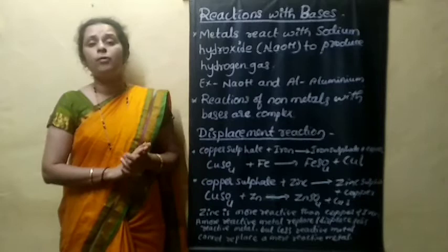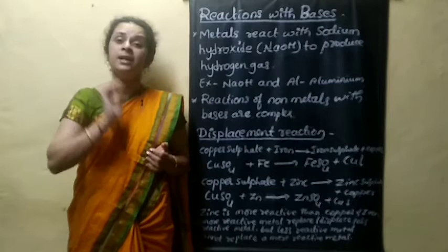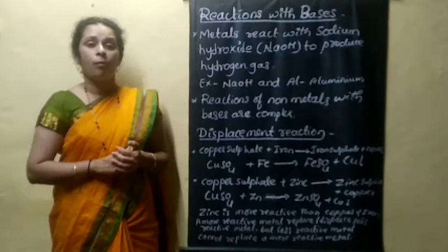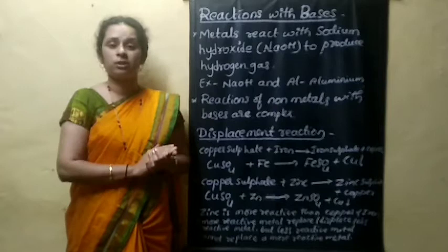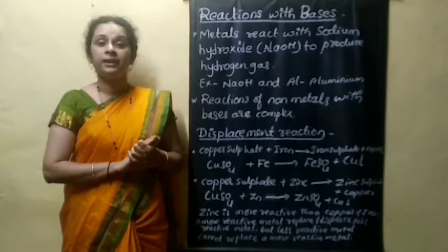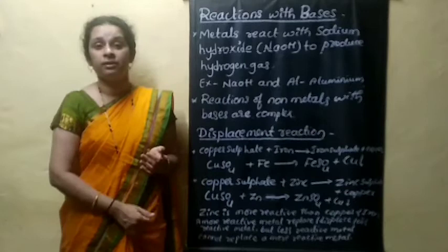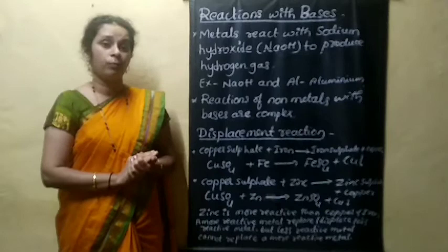A very good example of chemical displacement reaction is copper sulfate with an iron nail or iron blade. Take a beaker with copper sulfate solution, which is blue in color, and add an iron nail to it. After some time, you will see a brown color coating on the iron nail, and the copper sulfate solution will change to green color.